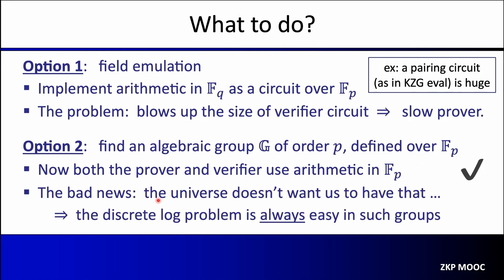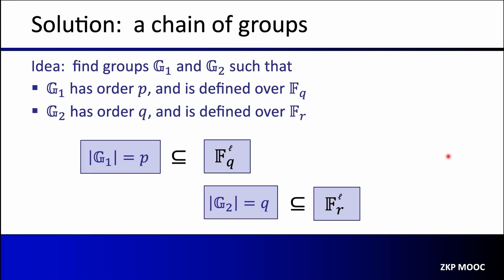A better idea: find an algebraic group G that has order P and is also defined over F_P. Then the prover and verifier both use arithmetic over F_P — a perfect match. Unfortunately, one can prove that the discrete log is always very easy in such groups, so they cannot be used for polynomial commitments. The next idea is a chain of groups: find groups G1 and G2 such that G1 has order P and is defined over F_Q, and G2 has order Q and is defined over F_R. The inner prover handles circuits over F_P, the verifier needs operations in F_Q, and the outer prover handles circuits over F_Q — a good match.